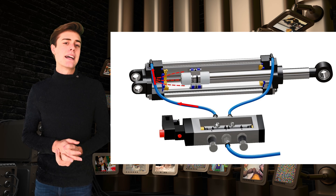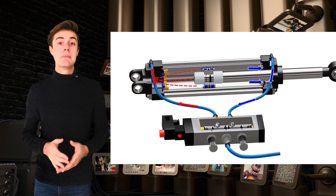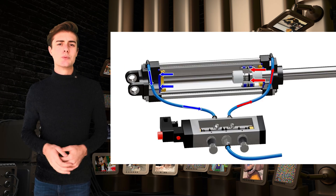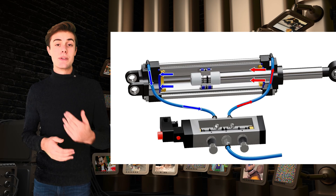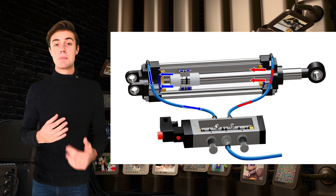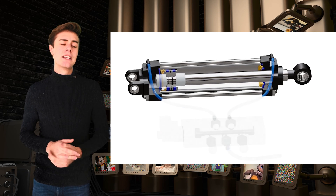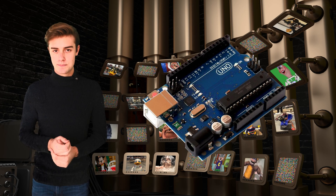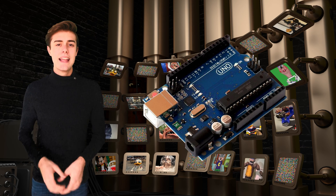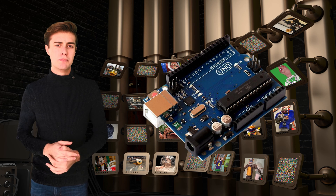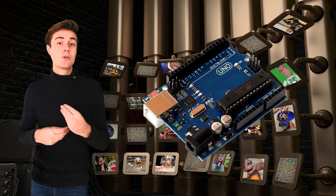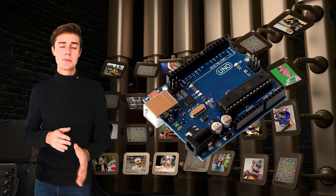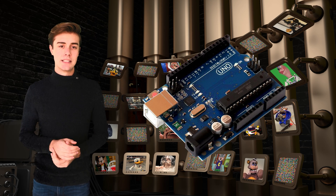The solenoid valve can be actuated manually using a button, but in order to synchronize it with the character and with audio and other parts of the show, the valves are actuated by a microcontroller — in my case, an Arduino. There are lots of very good YouTube videos that go into way more detail on how this works, so I will leave them in the description if you are interested.